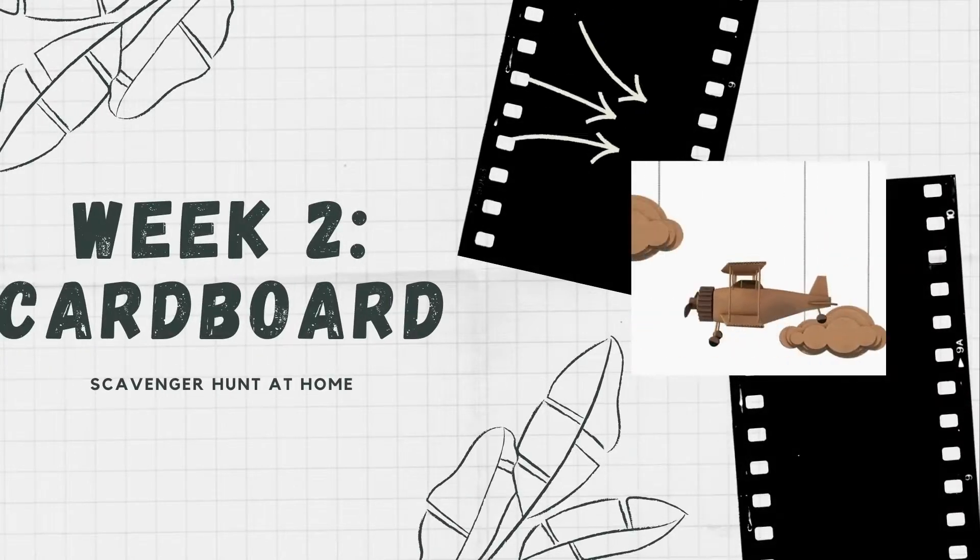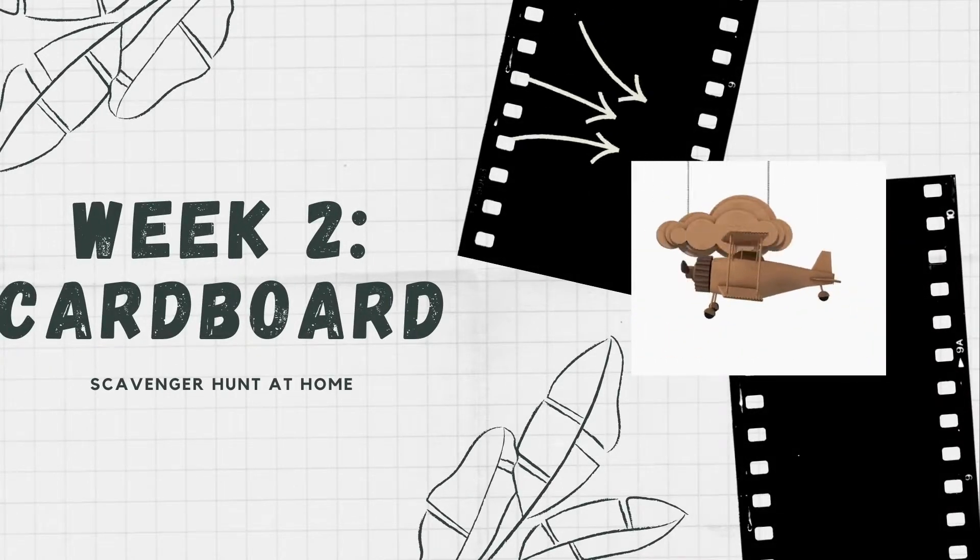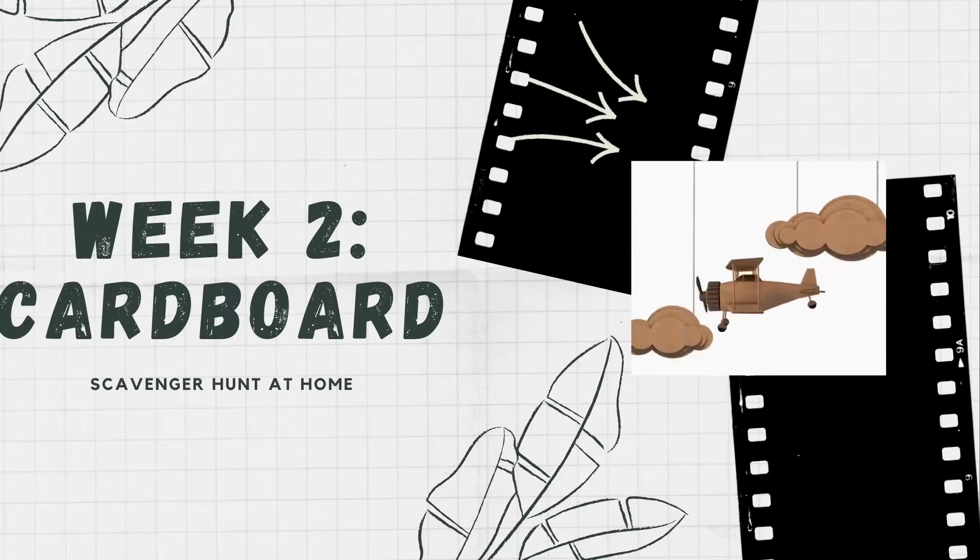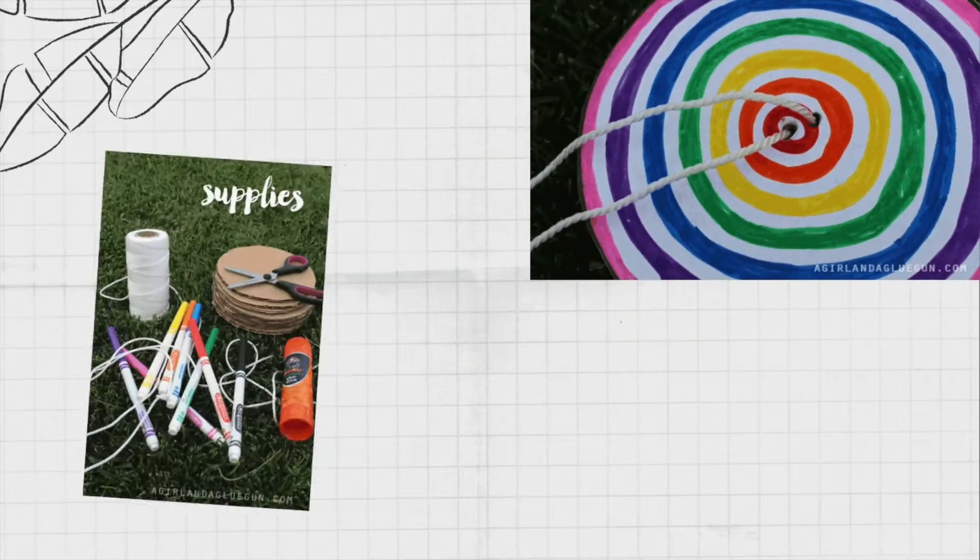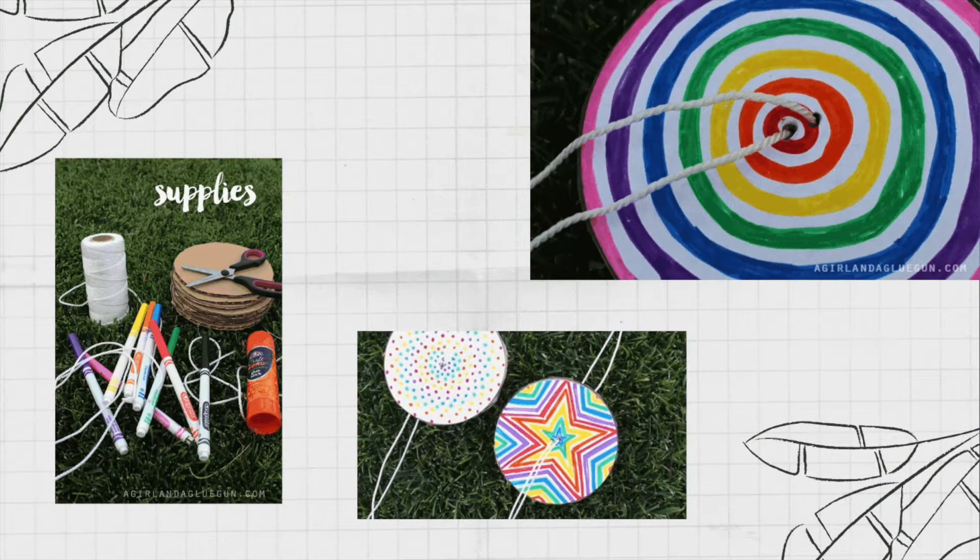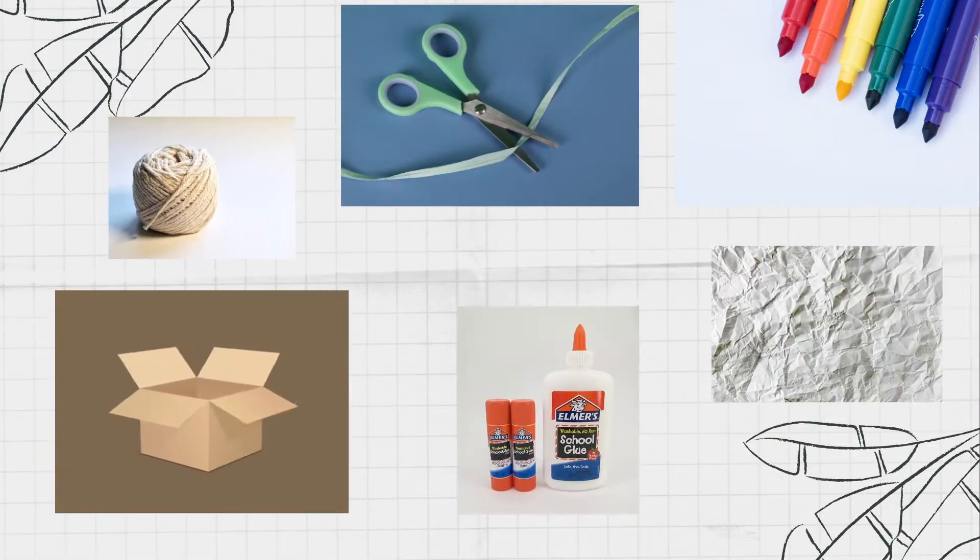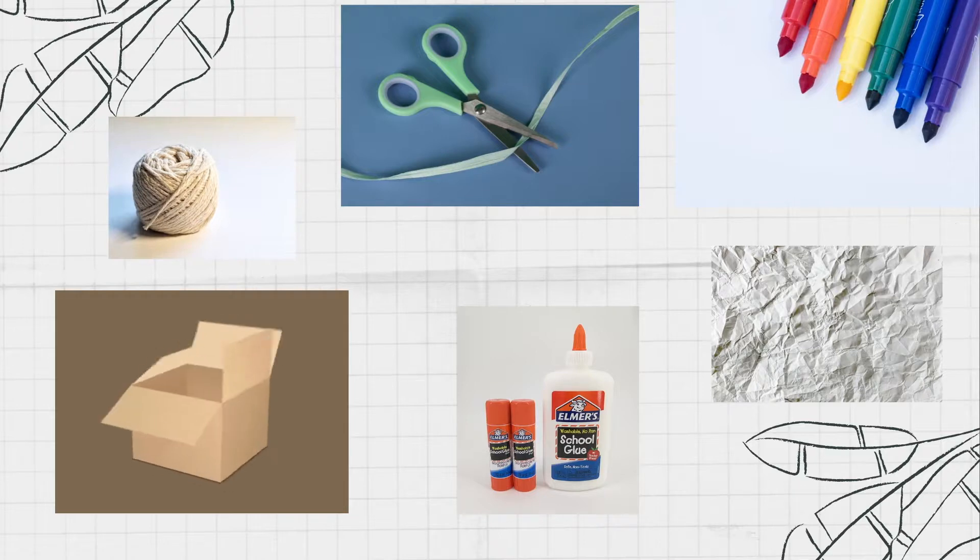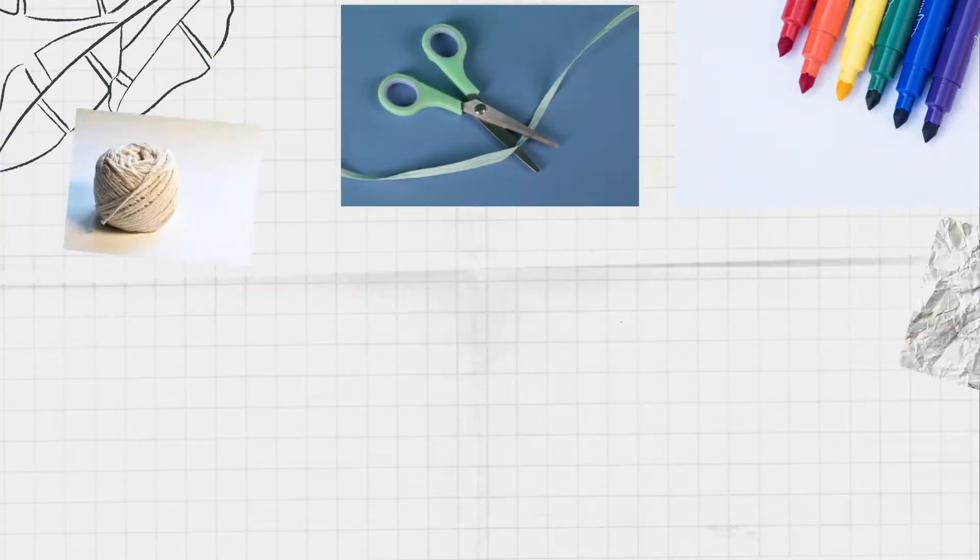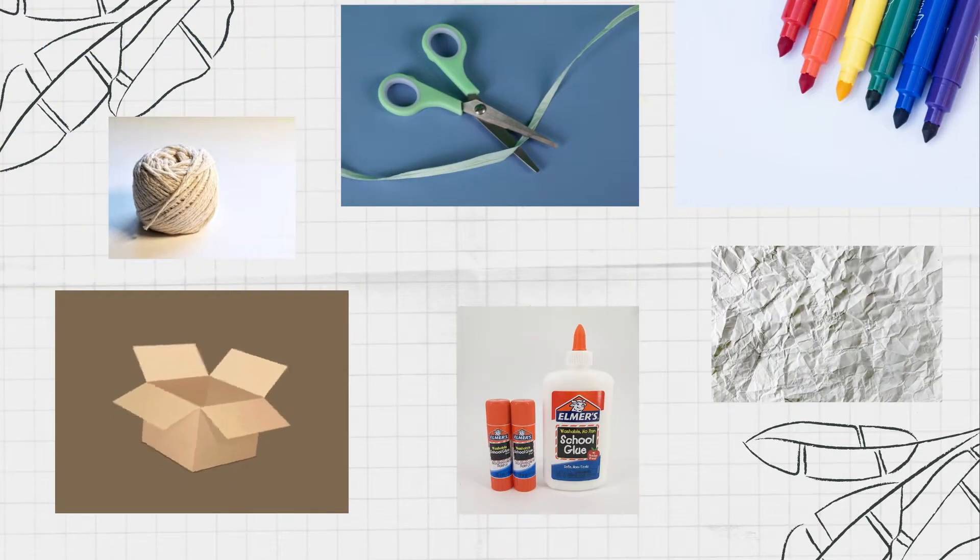Hey everyone, welcome to week two scavenger hunt at home. Our item for this week is cardboard, and for our first project we're going to be making cardboard paper spinners. Let's get started. So the materials you're going to be needing are some string, a pair of scissors, markers, cardboard of course, some paper and glue. You can use glue stick or liquid glue.